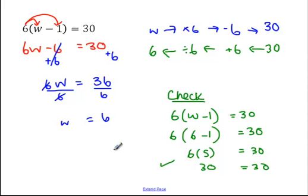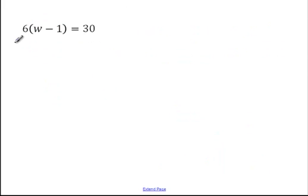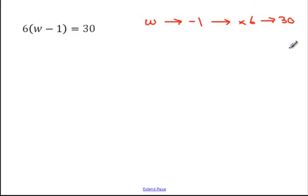There is one other way to solve equations with brackets — you don't have to expand them. You can say: I started with w, and because I do the brackets first, the first thing I do is subtract 1. Then I multiply everything by 6 and get 30. So working backwards, start with 30, divide by 6, then add 1. So 30 divided by 6 is 5, add 1 is 6. And w is equal to 6 — that's the correct answer. That's how you do it without expanding the brackets first.